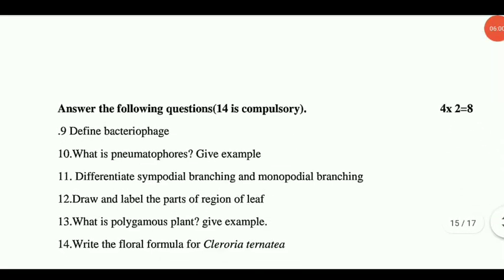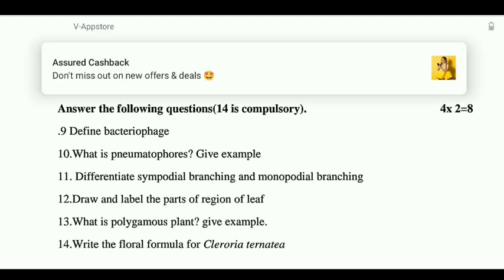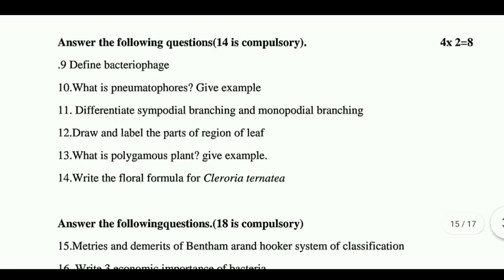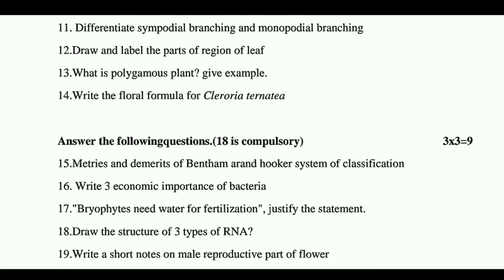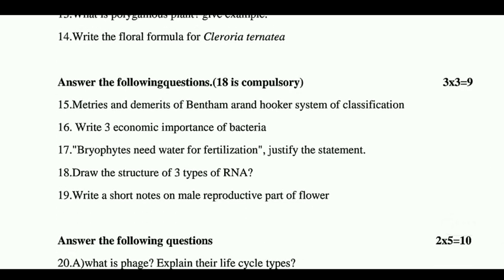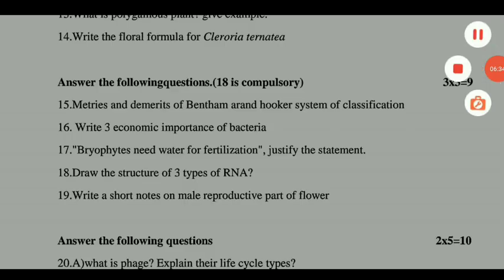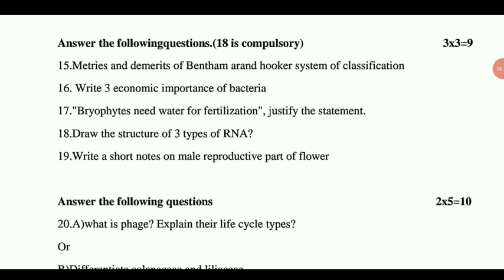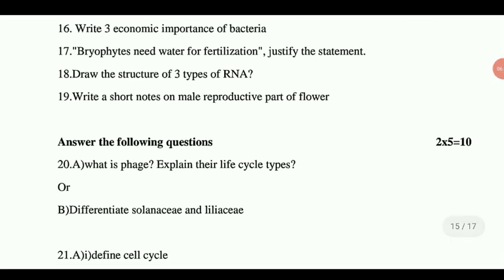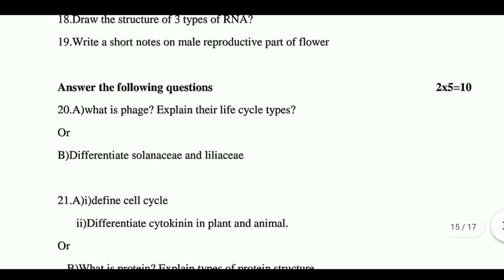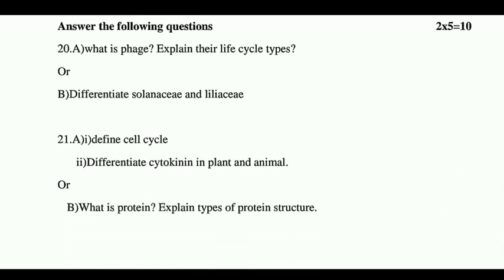That is why you have 5 more questions. Biobotany: define bacteria pitch, what is zoospores — give an example, difference between Sympodial branching and Monopodial branching, draw and label parts of regions of root, what is polyembryony plant — give an example, what are the floral formula of Clitoria ternatea, merits and demerits of Bentham and Hooker classification, write 3 economic importances of bacteria, Bryophytes need water fertilization — justify the statement, draw the structure of 3 types of RNA, write a short note on male reproductive parts of flower, what is pH, explain the life cycle types, difference between Solanaceae and Liliaceae, define cell cycle, difference between cytokinesis in plant cell and animal cell, what is protein, explain the types of protein structures.